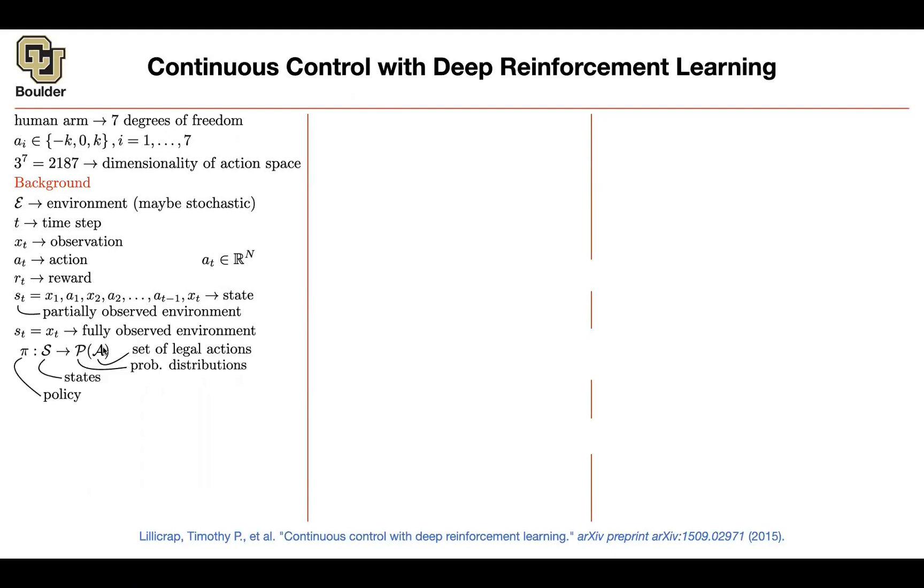And then you're going to have a policy that's going to depend on the state that you're currently at. Given that I'm currently at this state, the policy is going to define a probability distribution over the set of actions that could happen.